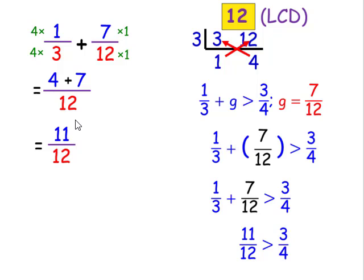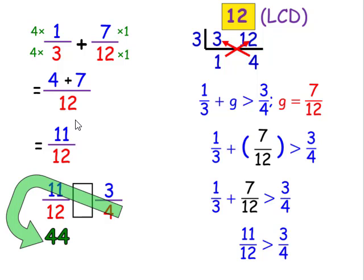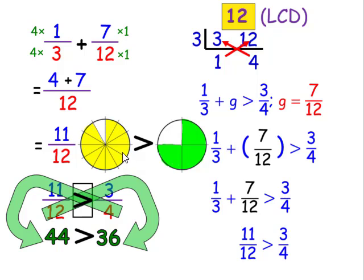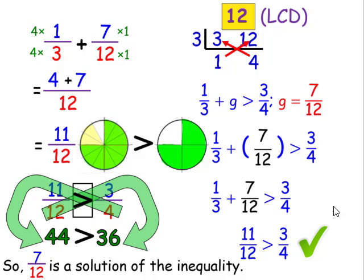Now we need to know whether 11 twelfths is actually greater than 3 fourths. One way of doing this is to cross multiply. 4 times 11 is 44. 12 times 3 is 36. Since 44 is greater than 36, 11 twelfths is also greater than 3 fourths. Another way that we could do this is by visually inspecting it. When we have 11 twelfths, we're only missing one small sliver. When we see 3 fourths, we're missing one slice, but it's a much larger slice. The yellow that we have two extra slices, 2 twelfths more. We can see that the yellow covers more space, has a larger area. Therefore, 7 twelfths is a solution of the inequality.